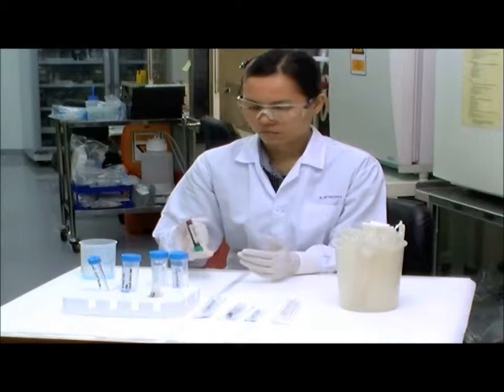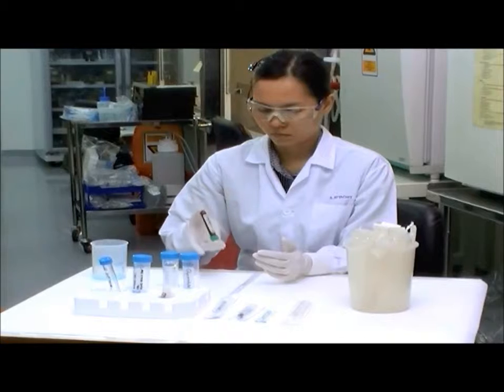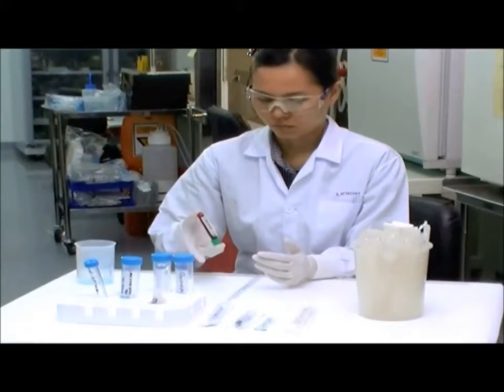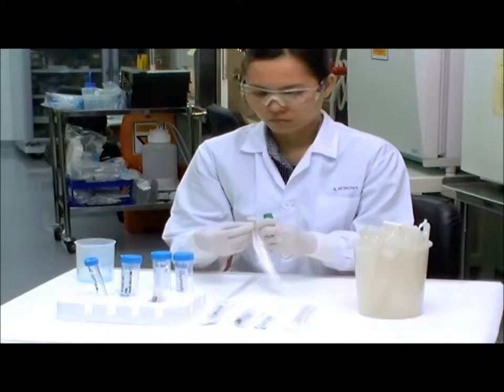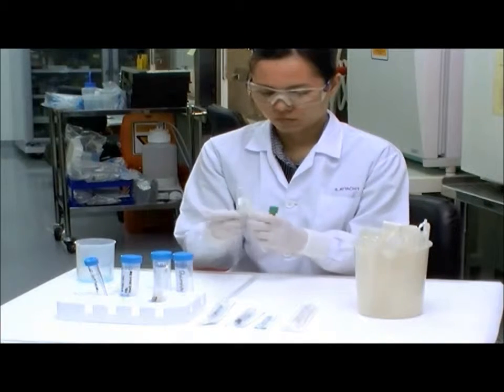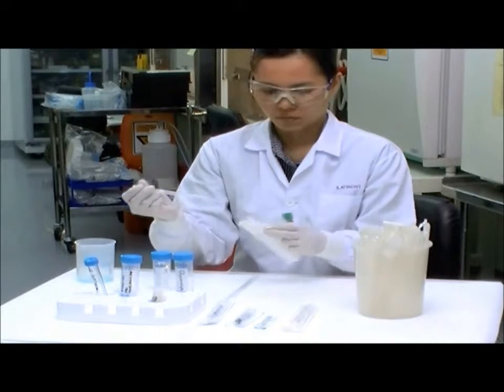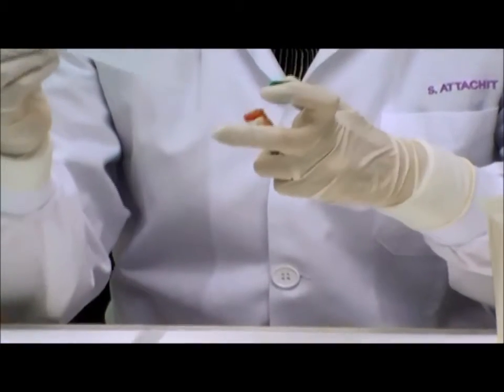To begin the procedure, mix the blood in the heparinized tube by inverting the tube a few times. Transfer the blood from the sample collection tube into a 15 ml centrifuge tube using a transfer pipette.